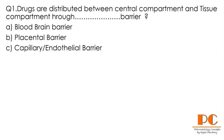Question number one: drugs are distributed between the central compartment and tissue compartment through which barrier? Option A: blood-brain barrier. Option B: the central barrier. Option C: capillary or endothelial barrier. Try to solve.